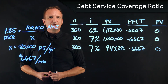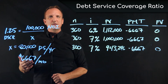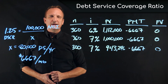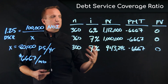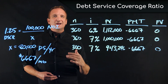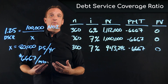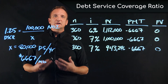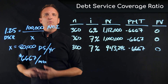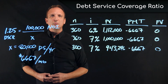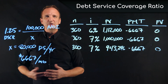So debt service coverage ratio tells us what percentage of net operating income over annual debt service needs to be maintained. Annual debt service can be affected by both interest rates and amortization. Most importantly, debt service coverage ratio lets us know how much extra net operating income we have over our loan payments. This has been an overview on debt service coverage ratio — thanks for watching.